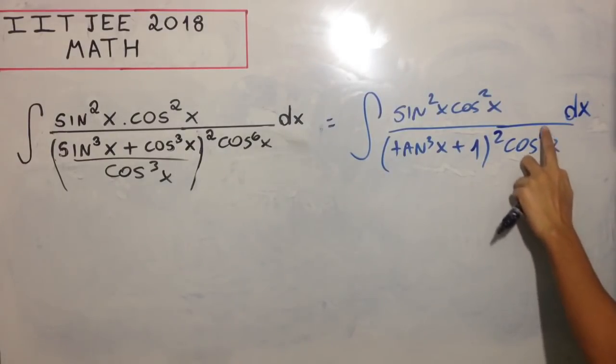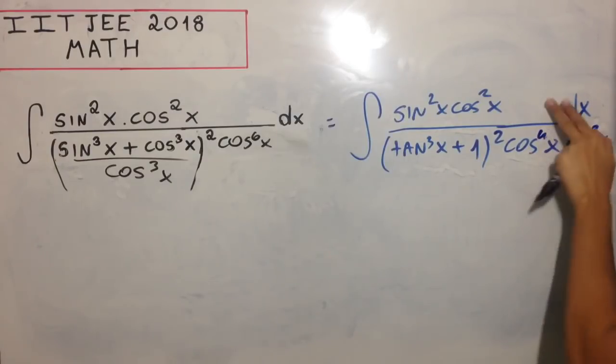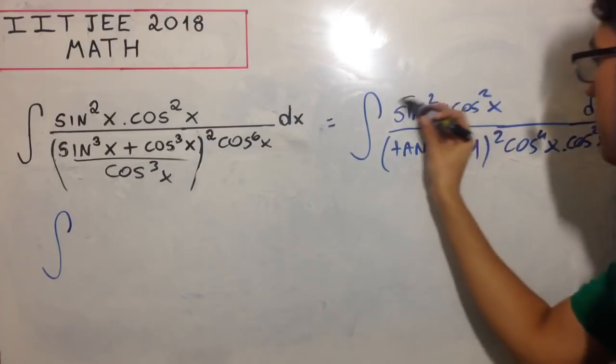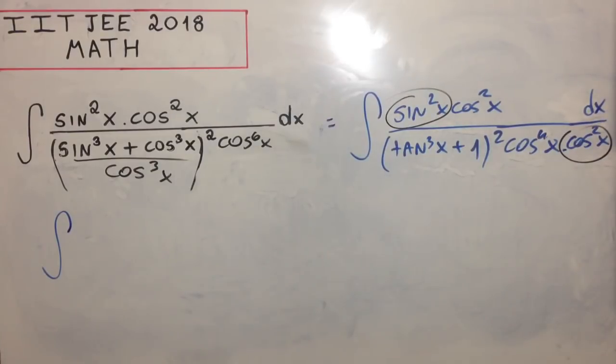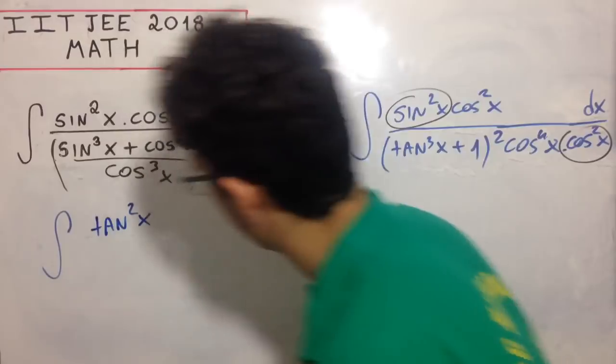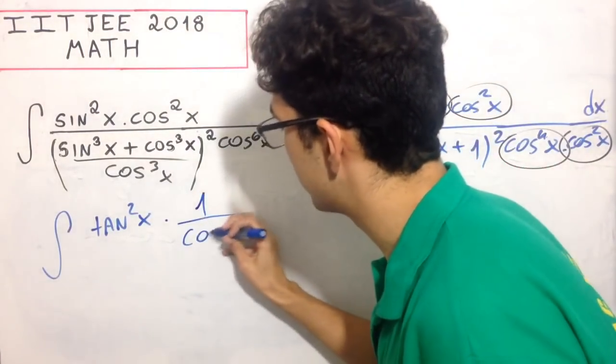We can write this in a different way as well. The denominator can be rewritten like this with cos⁶x factored out.